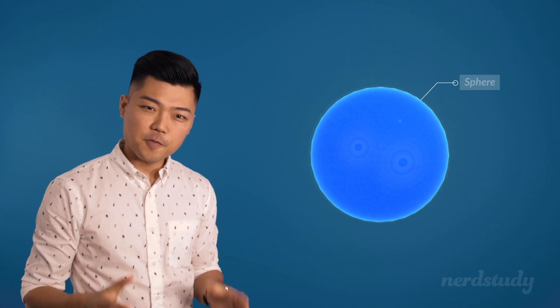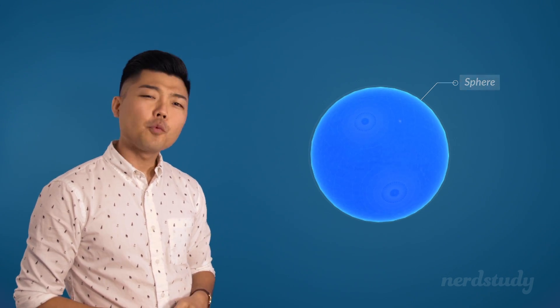Alright guys, here we have before us a sphere. Good. Now if you want to know the area of the outer layer of this sphere, or shall I say the surface area, how do we go about doing this?